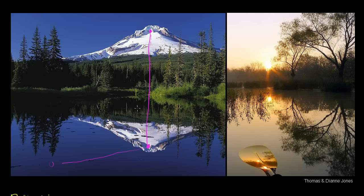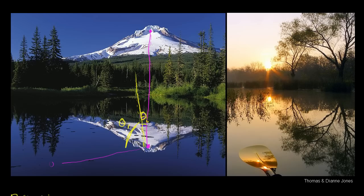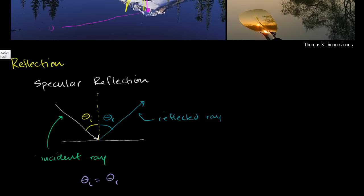If you draw a vertical perpendicular to the water surface, the angle at which the light ray approaches before it bounces is the incident angle. The angle of reflection on the other side is equal to it. Another way to think about it: if you look at the surface of the water itself, the angle between the incident ray and the surface equals the angle between the reflected ray and the surface — because both pairs add up to 90 degrees.